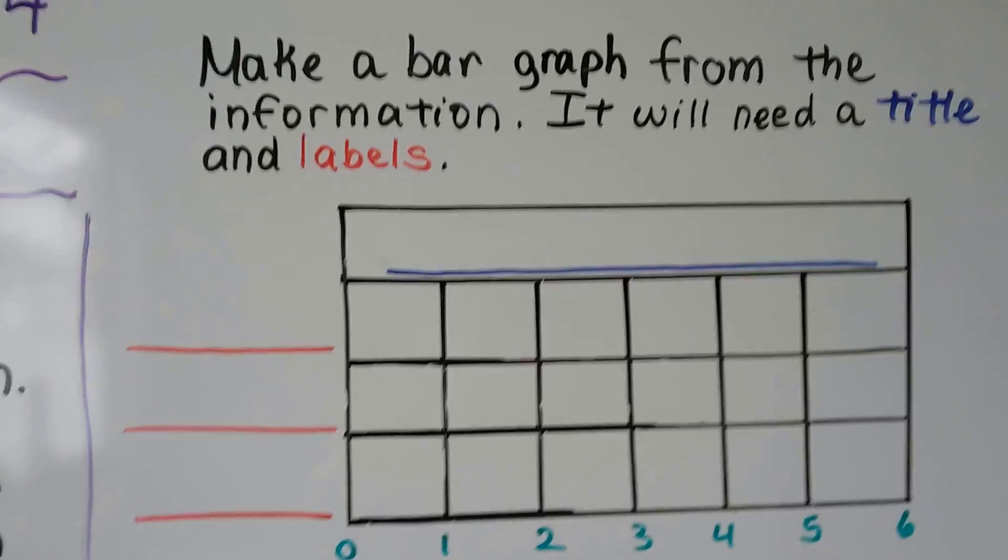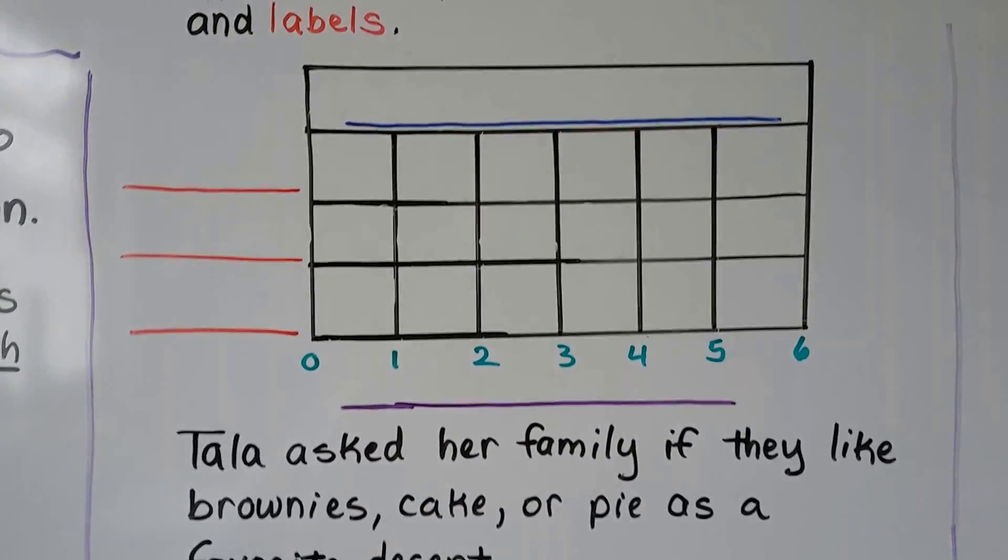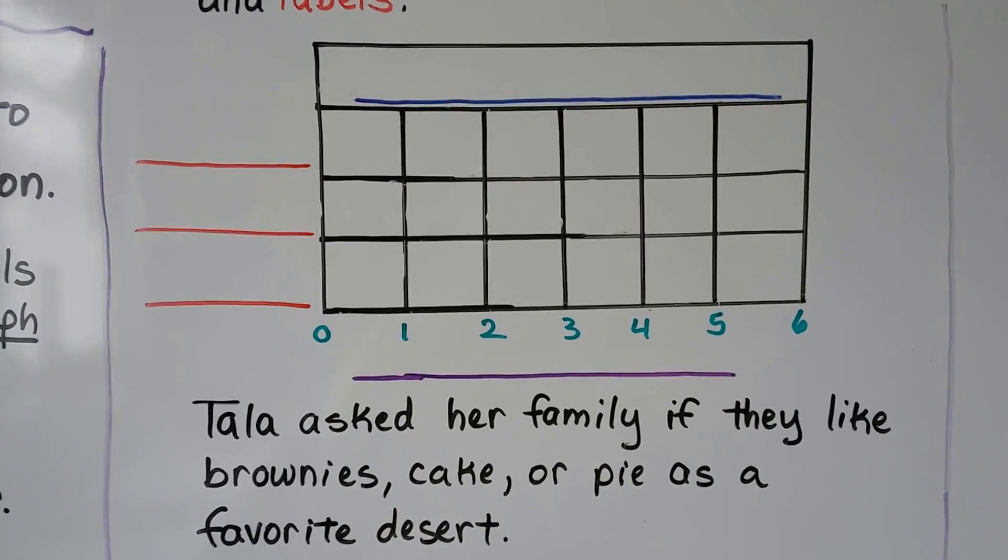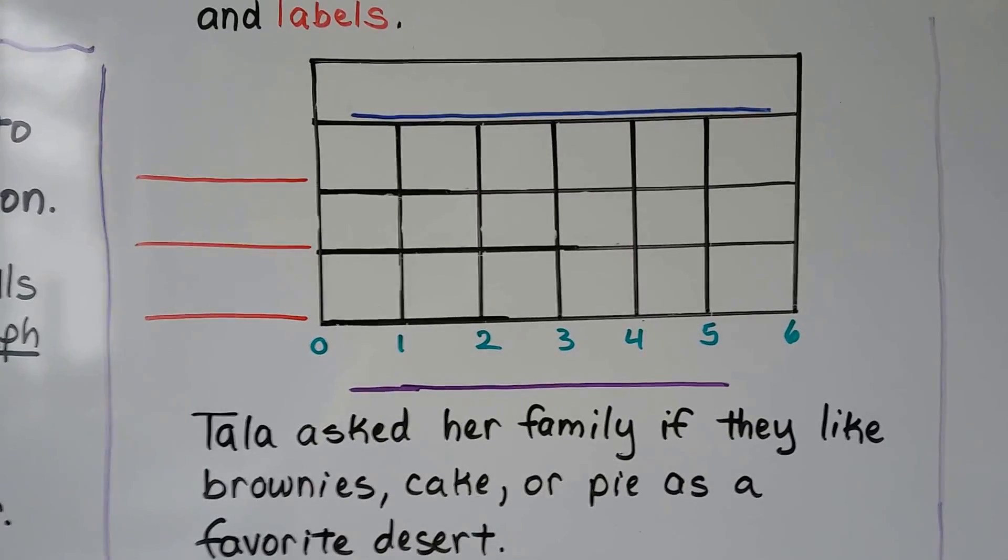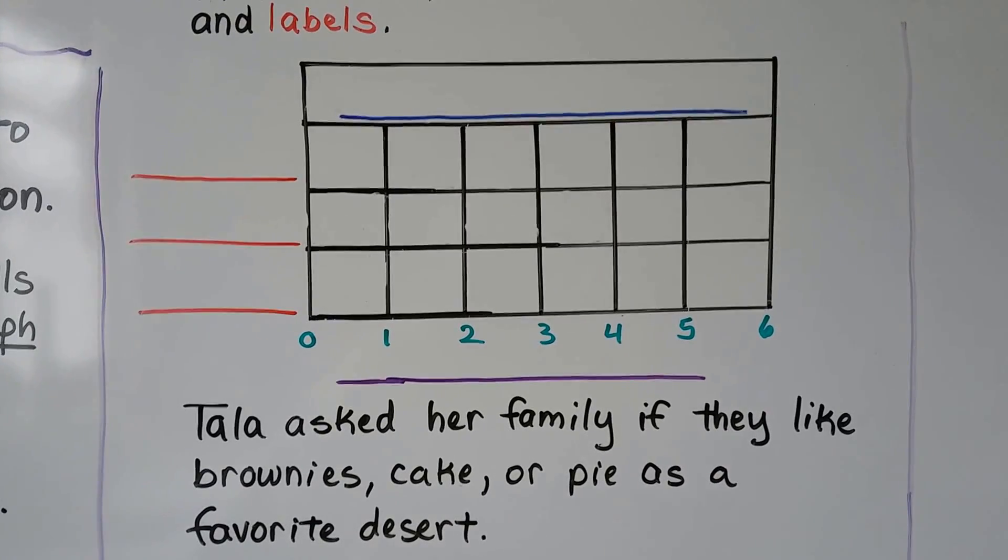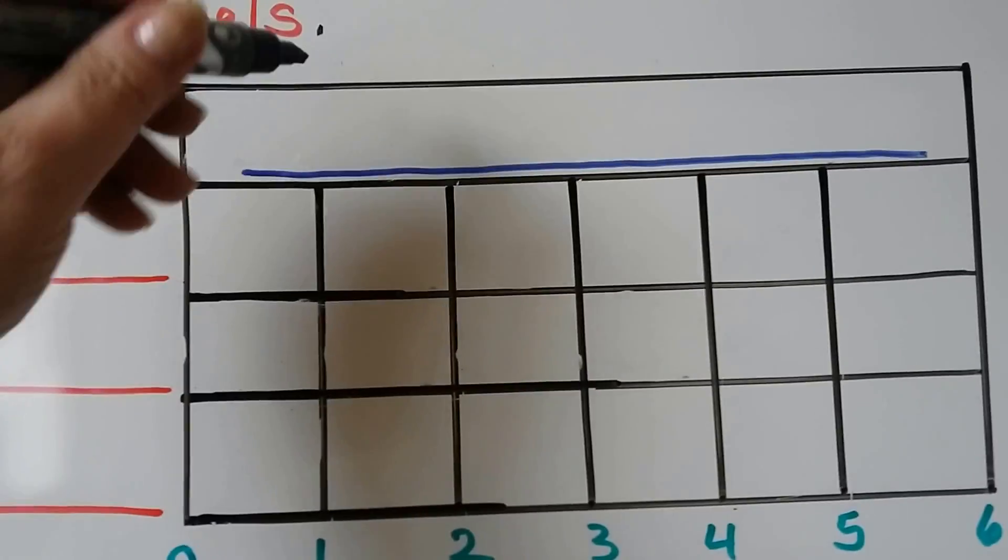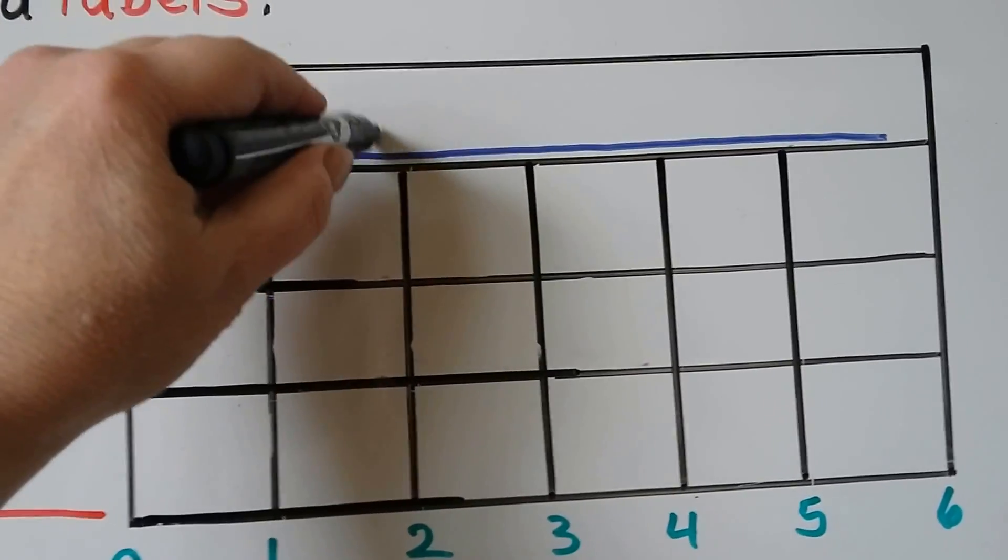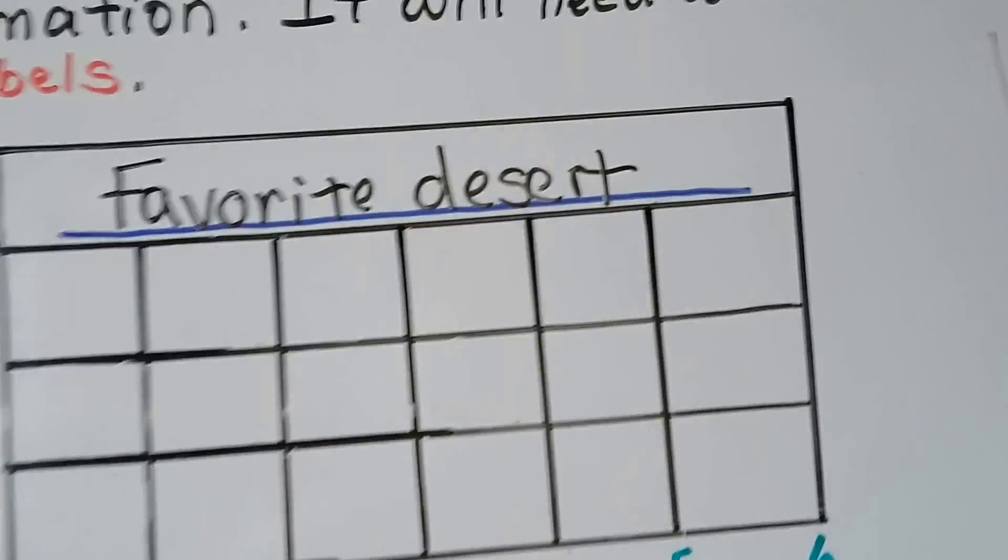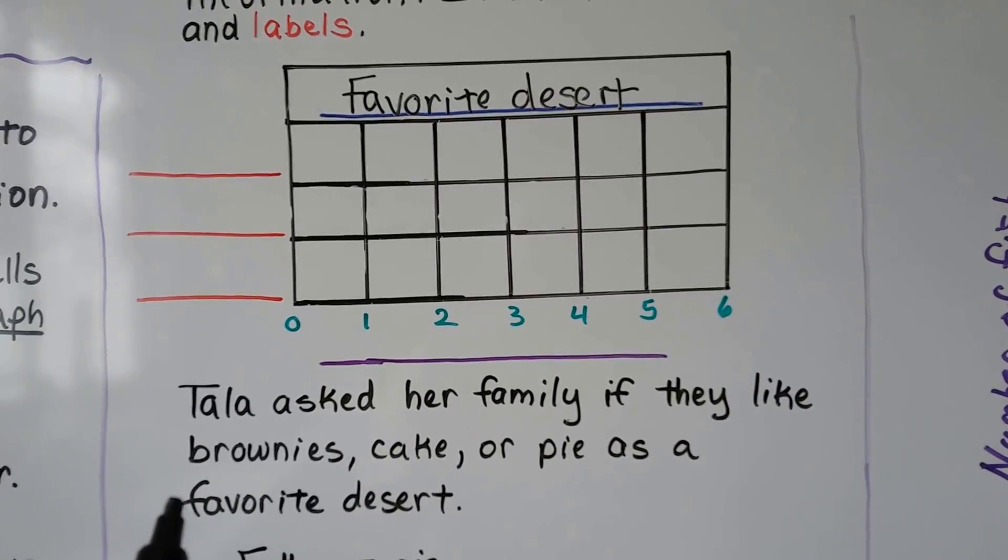We can make a bar graph from the information. It will need a title and labels. So let's look at the information. Tala asked her family if they like brownies, cake, or pie as a favorite dessert. So from this information they gave us, do you know what we can call this bar graph?